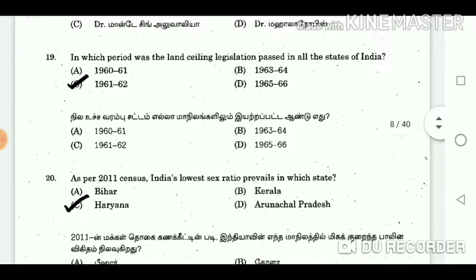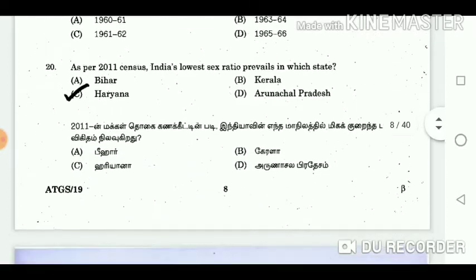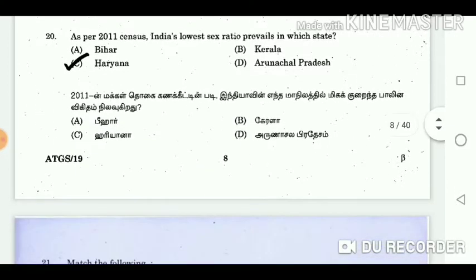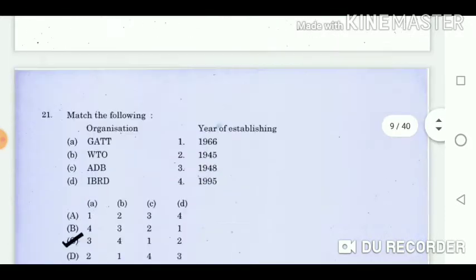Question 19: In which period was the land ceiling legislation passed in all the states of India? Answer: 1961-62. Question 20: As per the 2011 census, India's lowest sex ratio prevails in which state? Answer: Haryana.